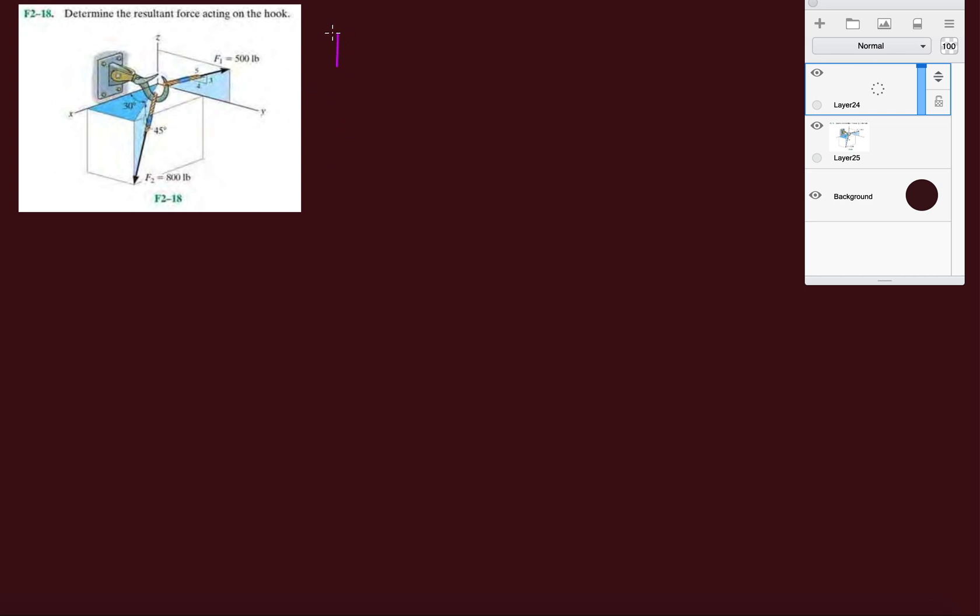Alright, so F1 doesn't have an X component, so 0i. And then we're going to take advantage of this perfect triangle here. These right triangles come in handy, so we're going to use them. So we're going to take the magnitude of that vector, 500, and then the Y component is going to be 4 fifths.